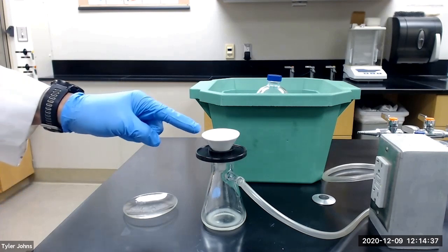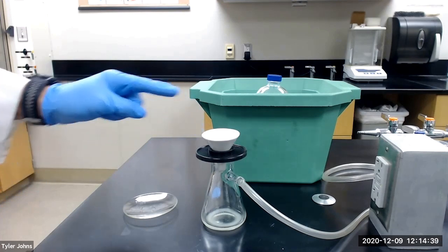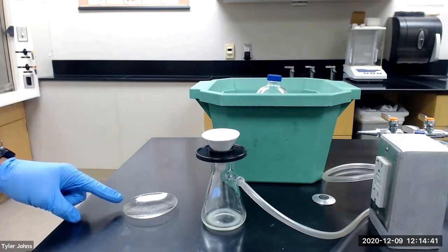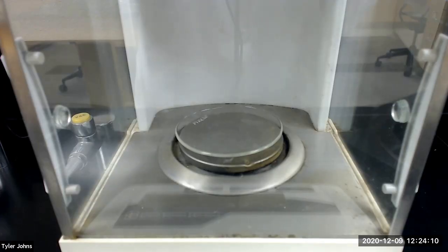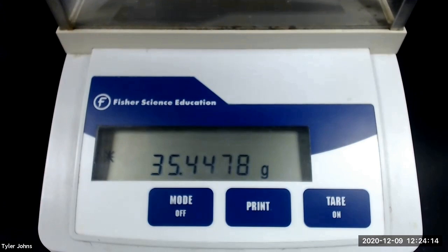As our purified benzoin continues to dry, we will next pre-weigh a watch glass. The mass of the pre-weighed watch glass is 35.4478 grams.